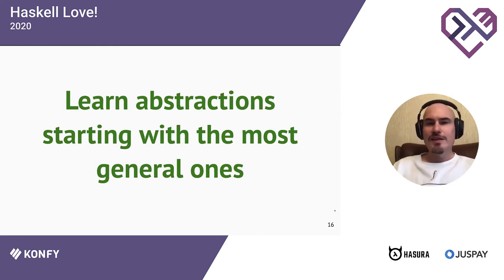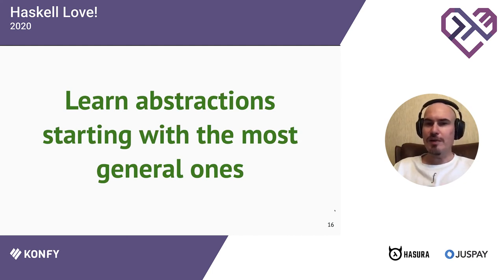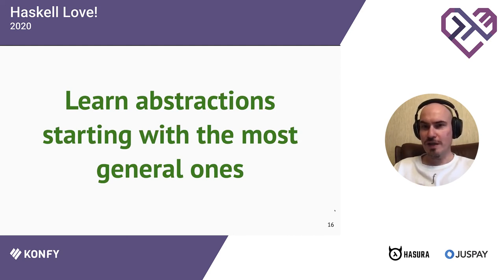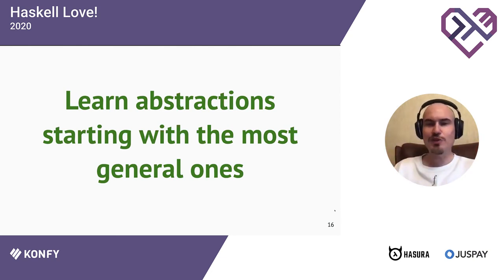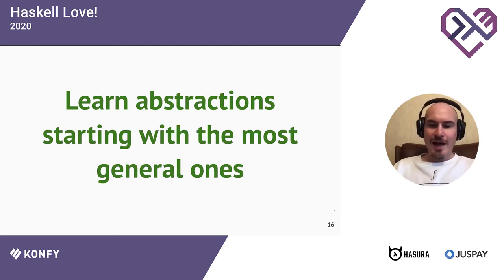Start with the most general abstractions and it will be easier. There are maybe a dozen or couple of dozens of them. If you try to go backwards it's difficult - it's hard to learn profunctors if you don't understand the basic notion of Category. But again, there is nothing to 'understand' - you just learn the definition, look at the types, look at a couple of examples, and that's enough.